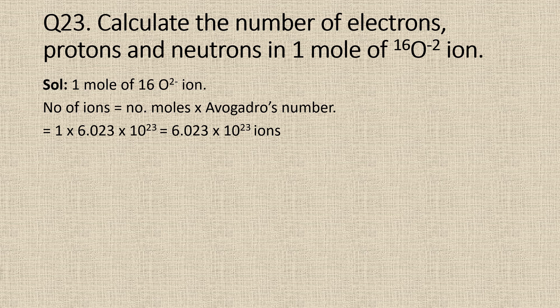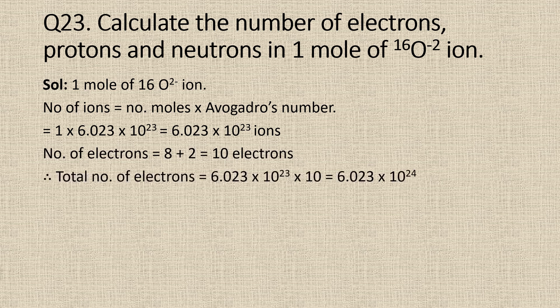Since there are Avogadro's number of O2 minus ions present, the total number of electrons will be equal to Avogadro's number into 10, which is equal to 6.023 into 10 to the power 23 into 10, which is equal to 6.023 into 10 to the power 24.